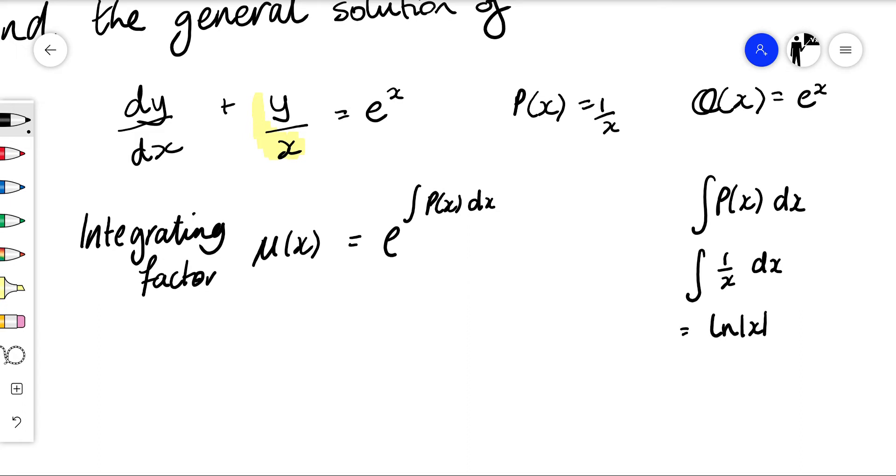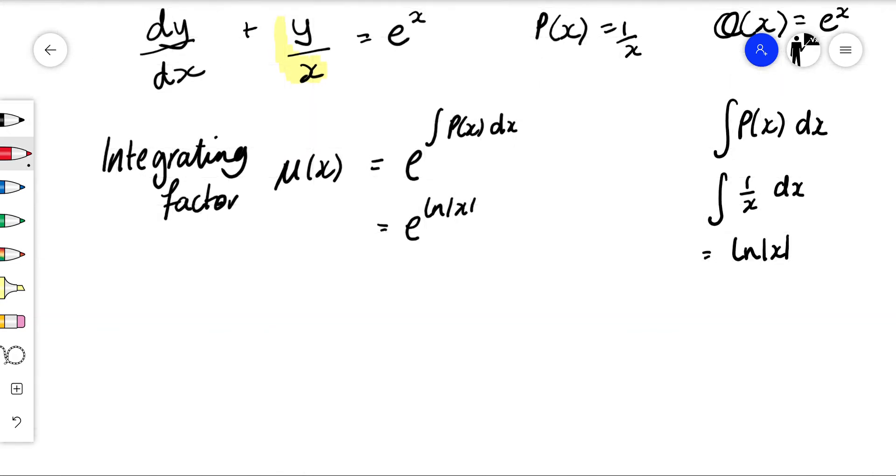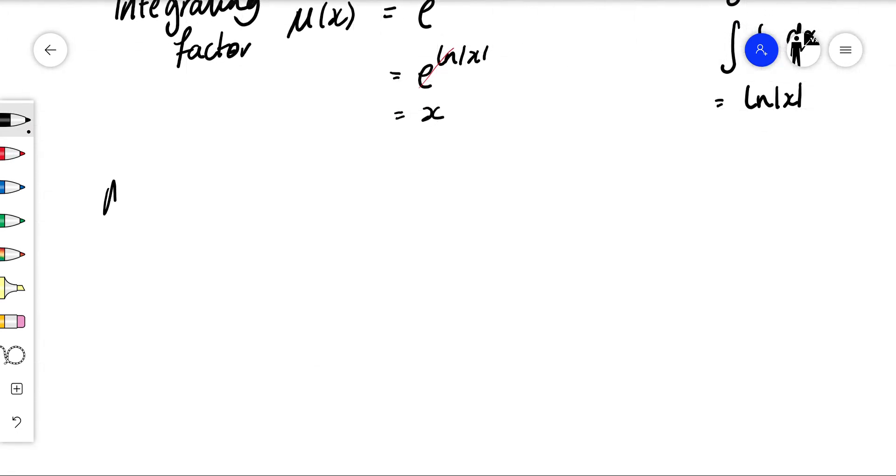Okay, so my integrating factor is e to the log the absolute value of x. Exponential function of the log will simplify which will give us x as our integrating factor. The next stage is